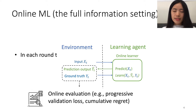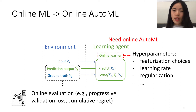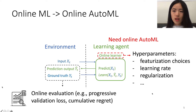Online learning is a desirable learning paradigm that can learn from real-time experiences. But similar to the case in the offline batch learning setting, effective online learning also involves the tuning of hyperparameters — for example, featurization choices, learning rate, regularization, and so on.